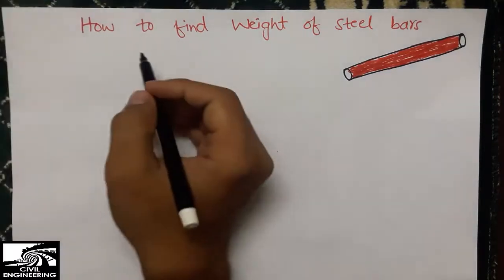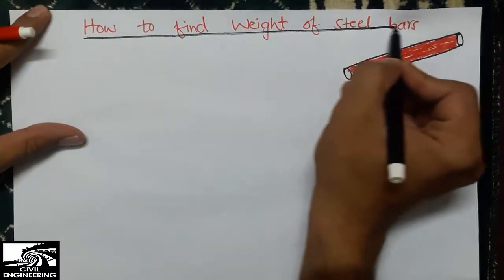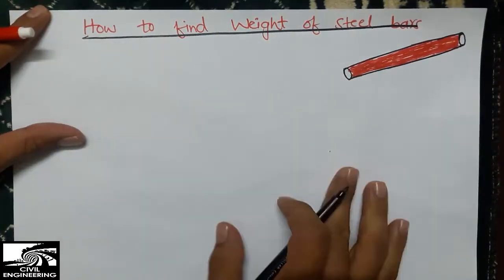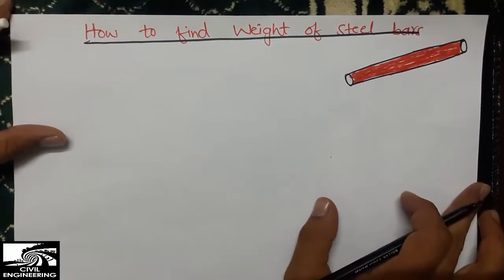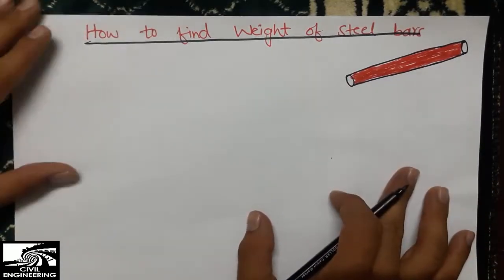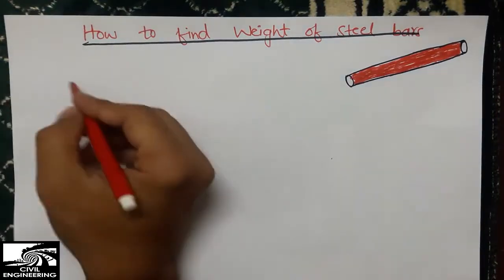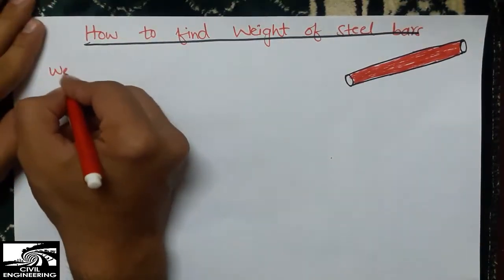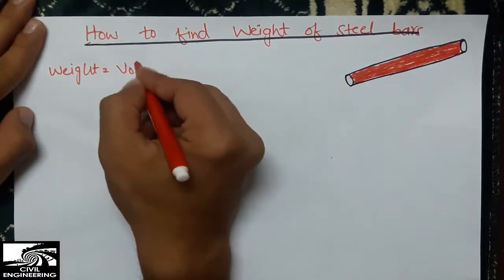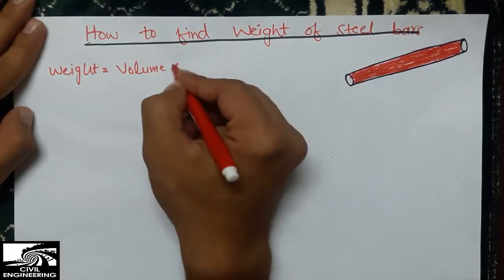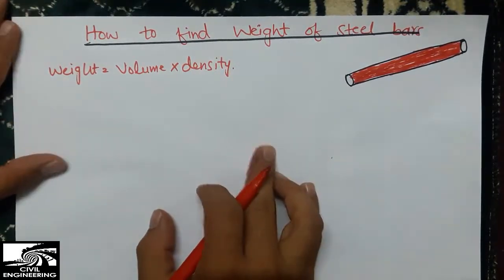Today our topic is how to find the weight of steel bars. We can find the weight of any object using one famous relation: weight is equal to volume multiplied by density.